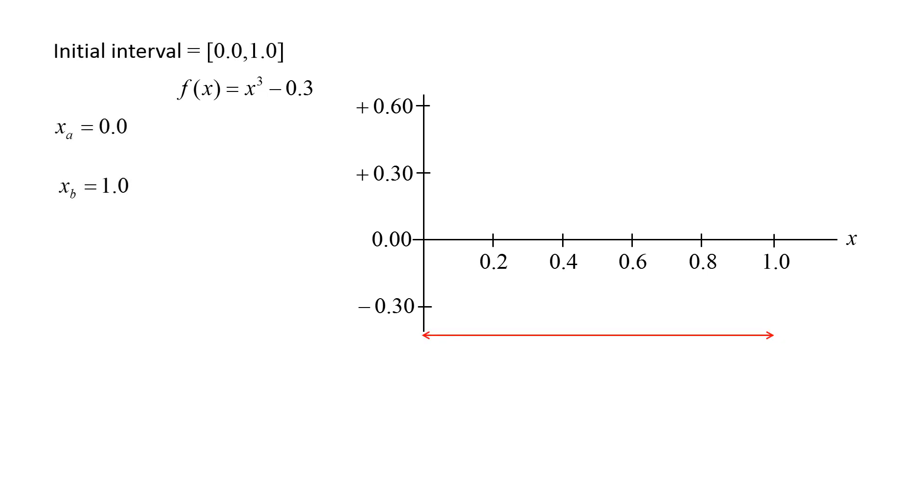The left bound is called xa and has the value of 0, and the right bound is called xb and has the value of 1. Our initial choice of xa and xb could be anything, as long as the root exists between them.